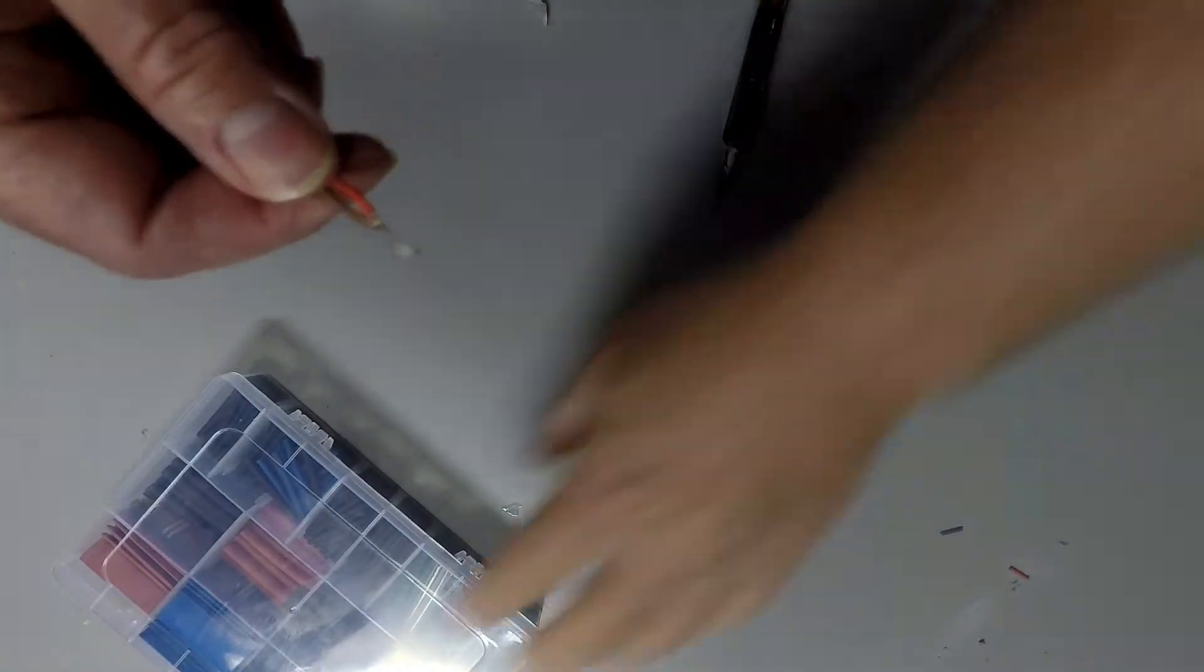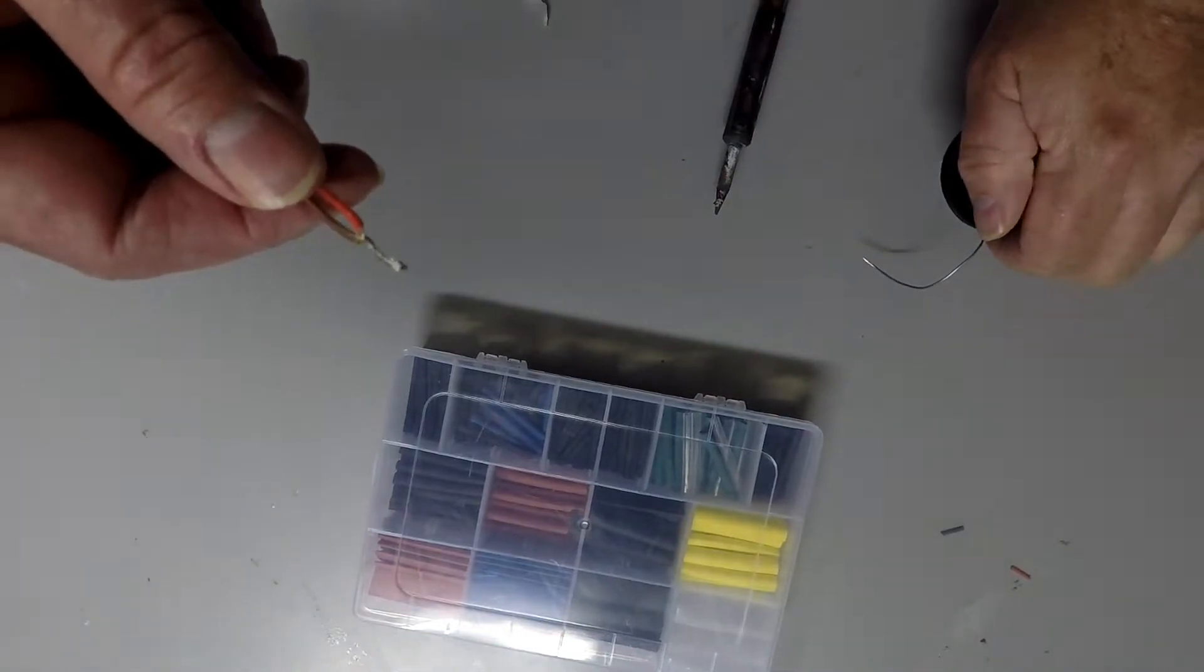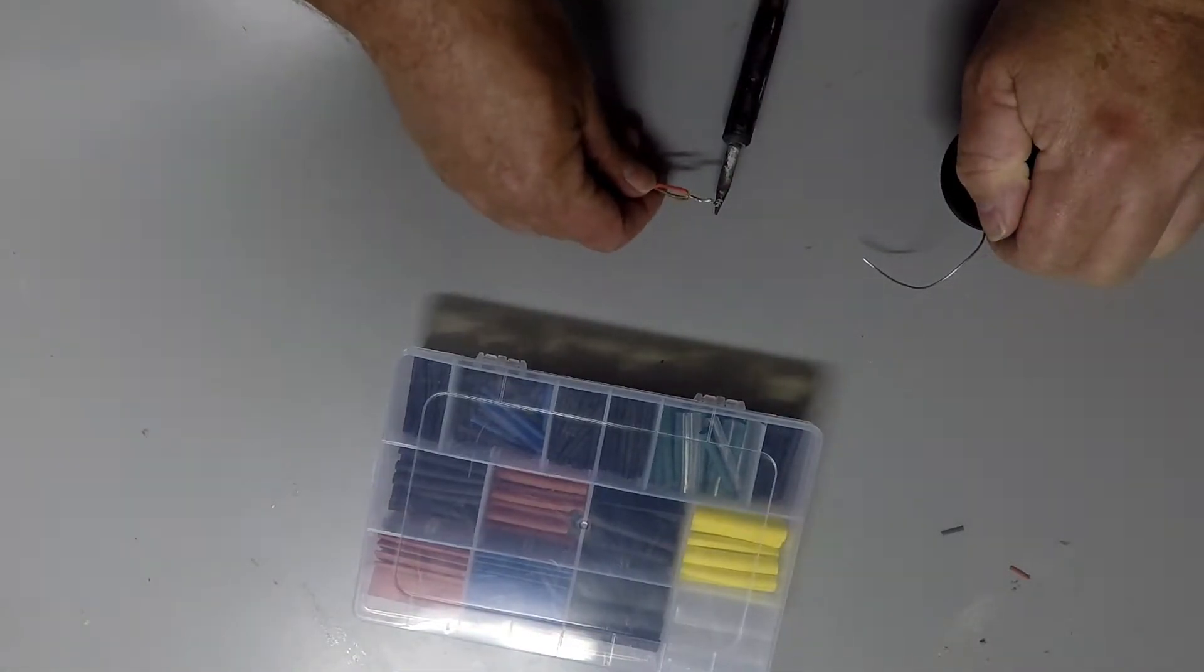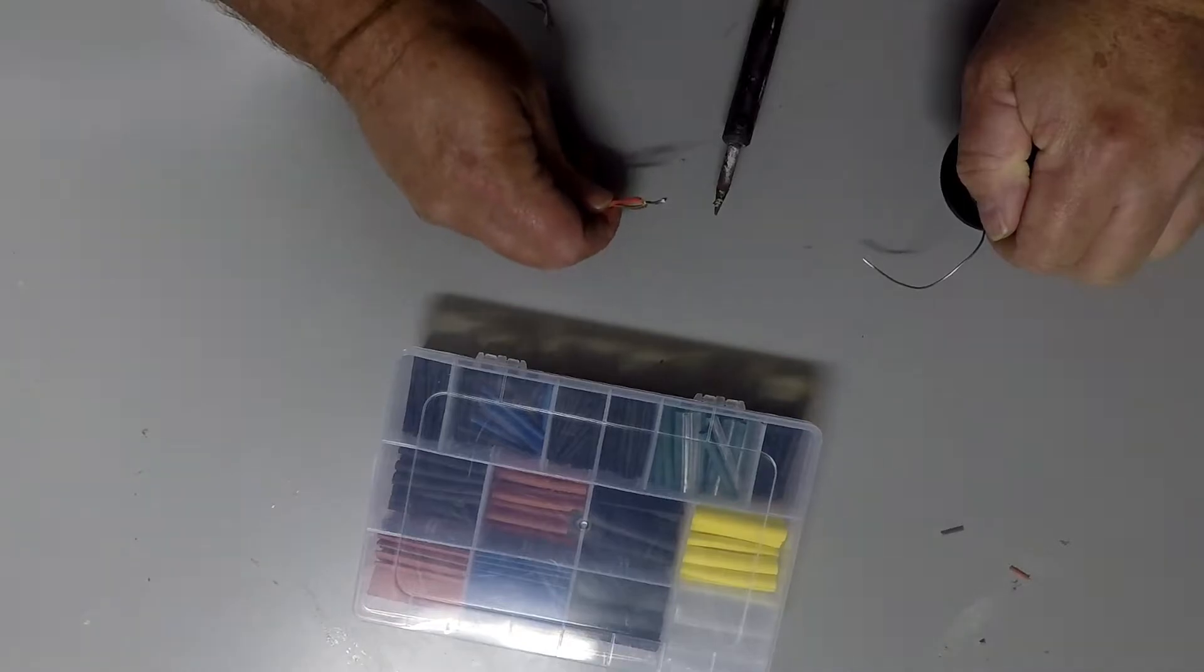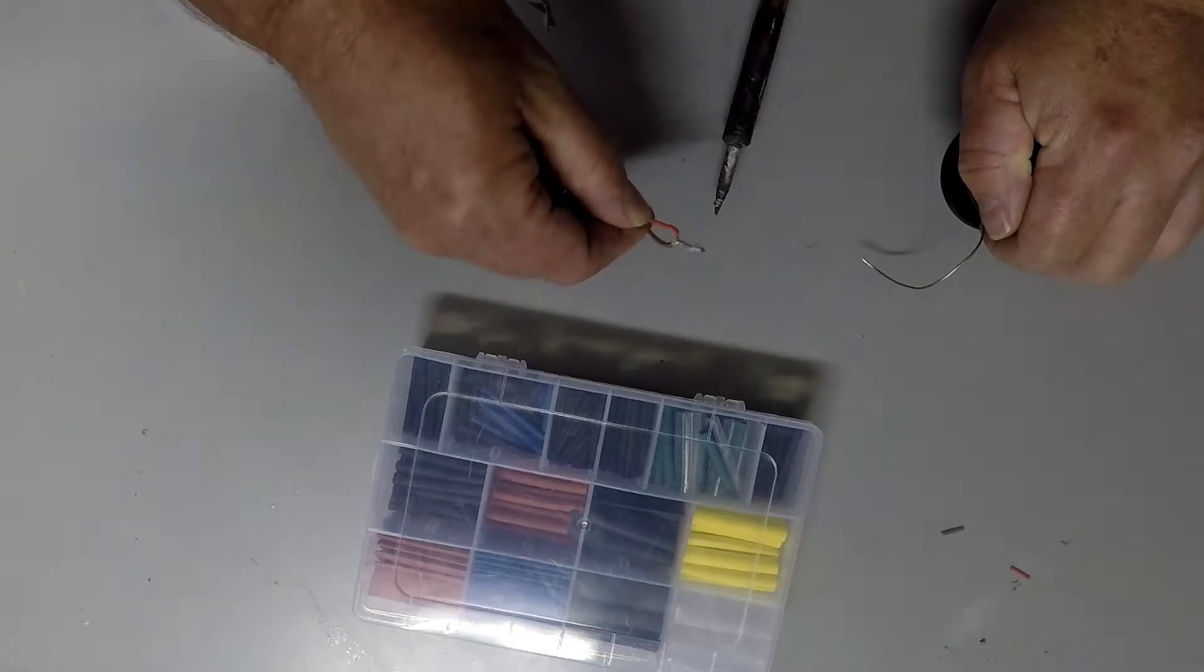And then all you need to do, the heat shrink over the end, use either the soldering iron or a heat gun. A heat gun is not a hair dryer. You can't dry your hair with a heat gun, you'll burn your head. They're generally about 400 degrees. So just be careful of that.